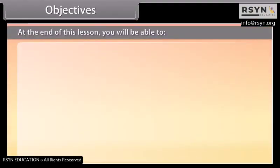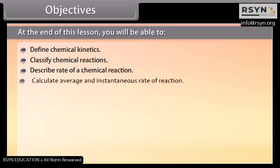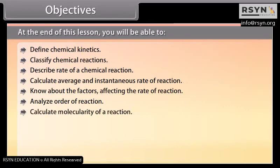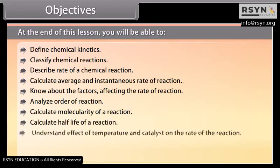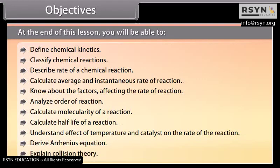At the end of this lesson, you will be able to: define chemical kinetics; classify chemical reactions; describe rate of a chemical reaction; calculate average and instantaneous rate of reaction; know about the factors affecting the rate of reaction; analyze order of reaction; calculate molecularity of a reaction; calculate half-life of a reaction; understand effect of temperature and catalyst on the rate of the reaction; derive Arrhenius equation; explain collision theory.